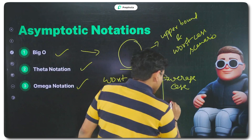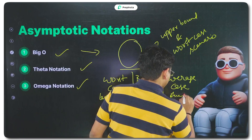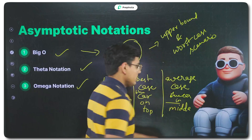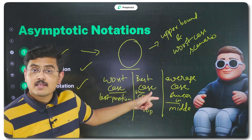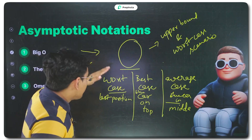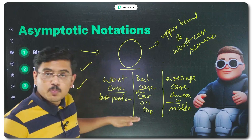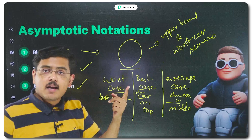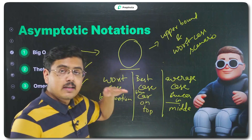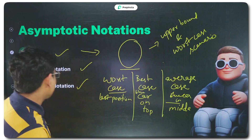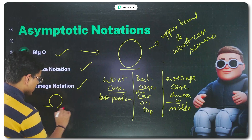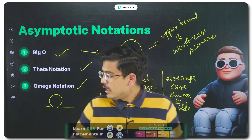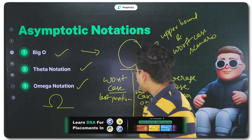If the blue car is in the middle, that is the average case. The best case is if the car is on top — you find it in the first step. In the worst case, when it is in the last position, you search throughout — that is represented by Big O. The best case is represented by the Omega notation. Omega is used for the best case.